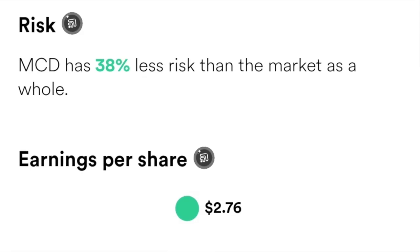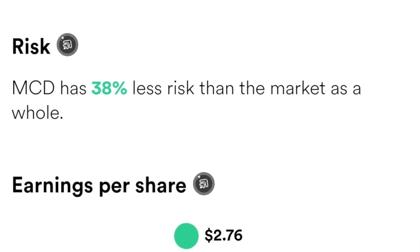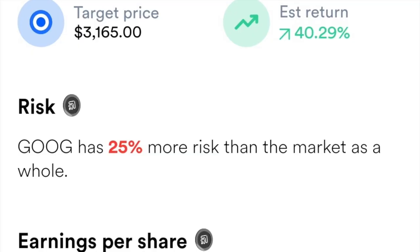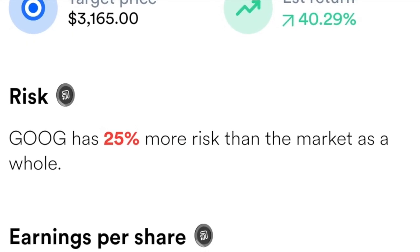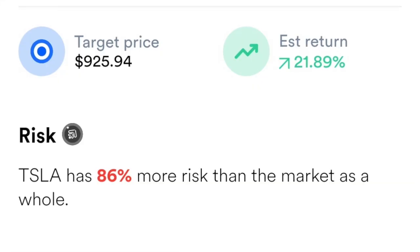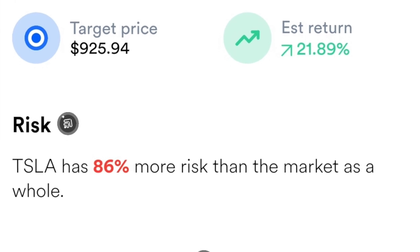Feature number three is the risk factor. Let's work with specific examples. McDonald's stock is said to be 38 percent less risky than the general market. Google is said to be 25 percent more risky than the general market. And Tesla is said to be 86 percent more risky than the general market.